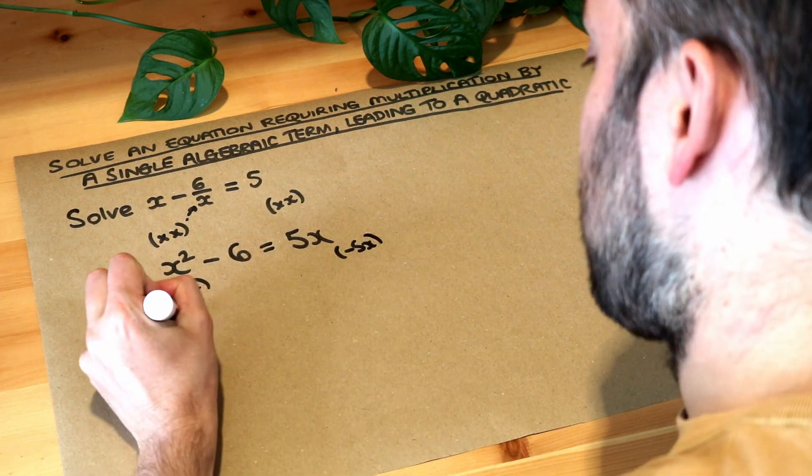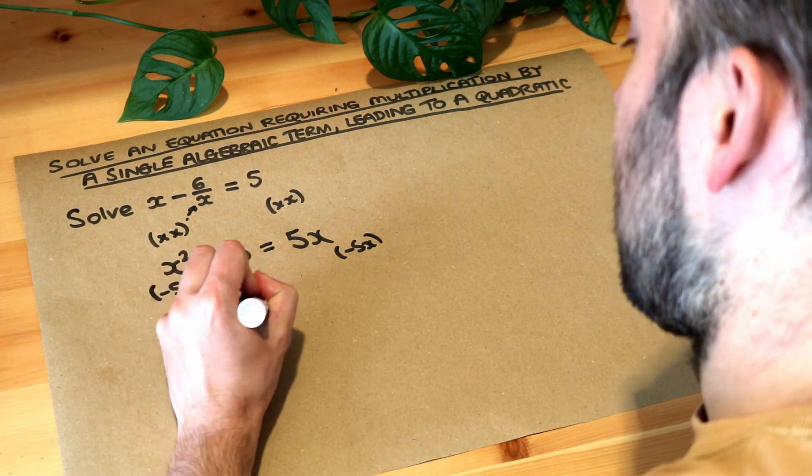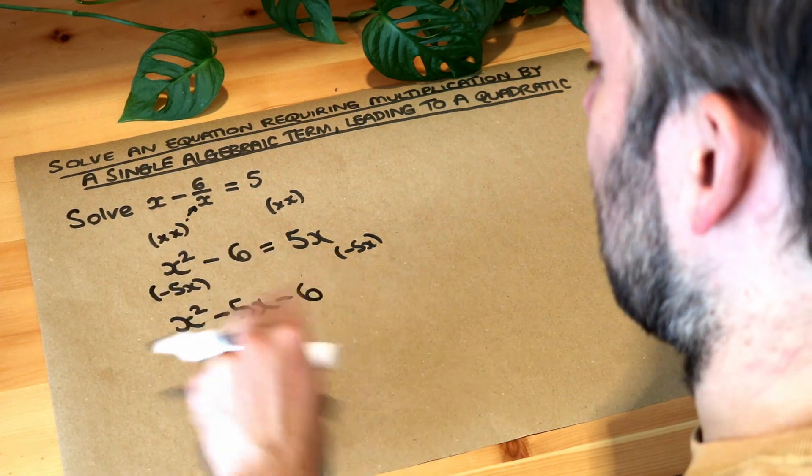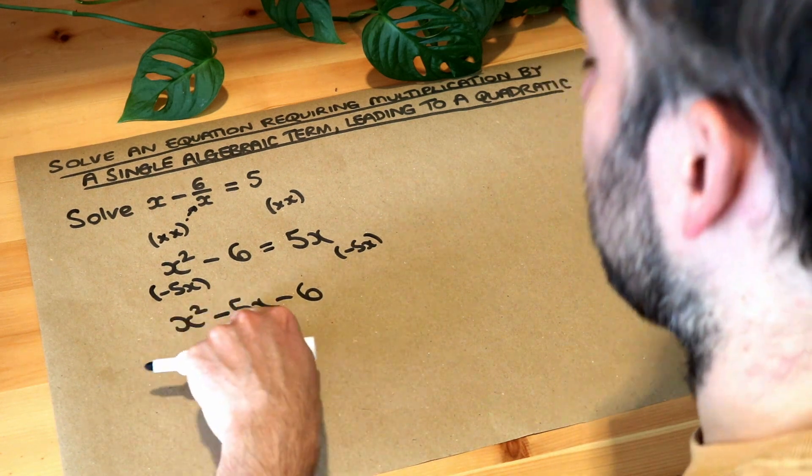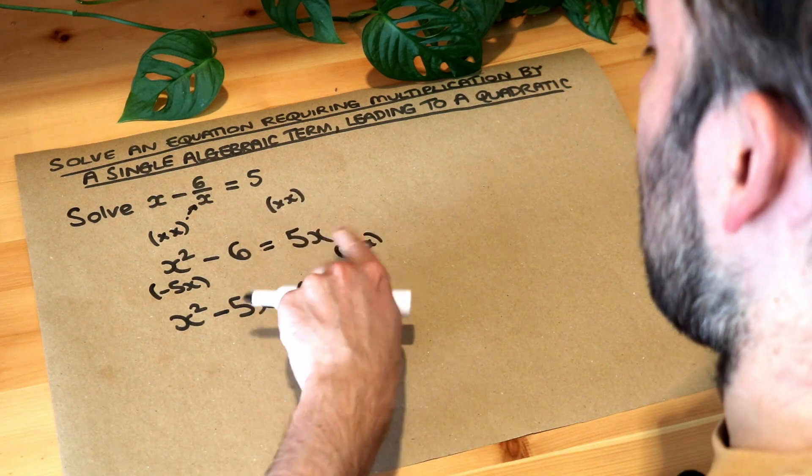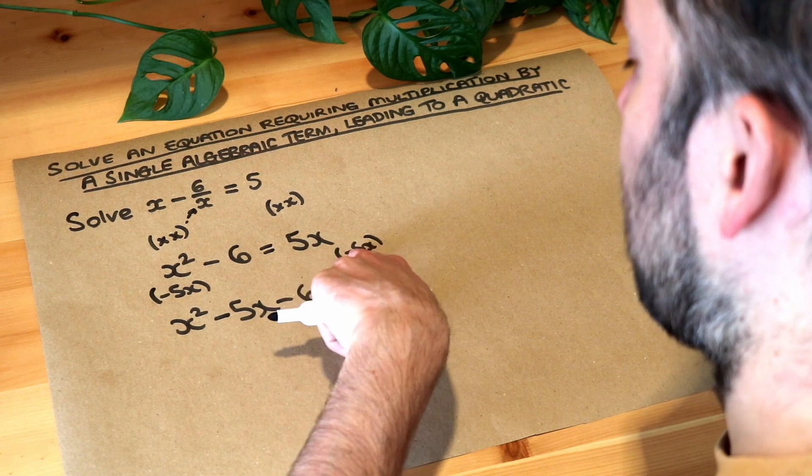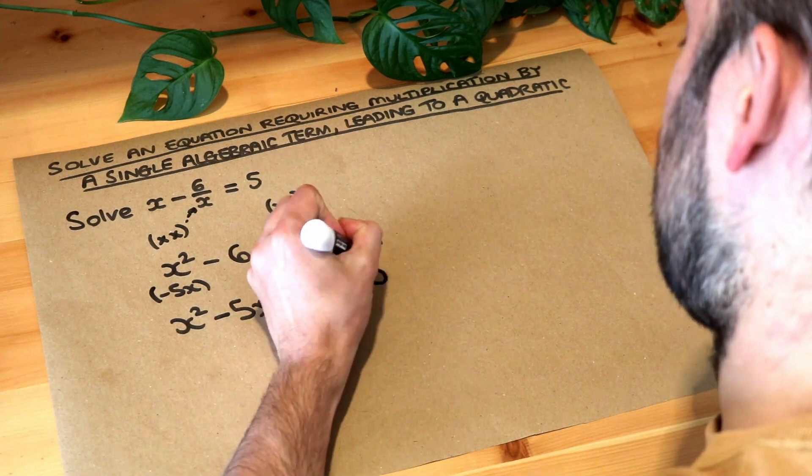If I do that I get x squared, I'm going to put the minus 5x after that, and then the minus 6, because we like to have x squared plus or minus something x and then the constant term, the non-x term, at the end. And then on the right hand side we subtracted 5x from this side as well, 5x minus 5x is just zero.